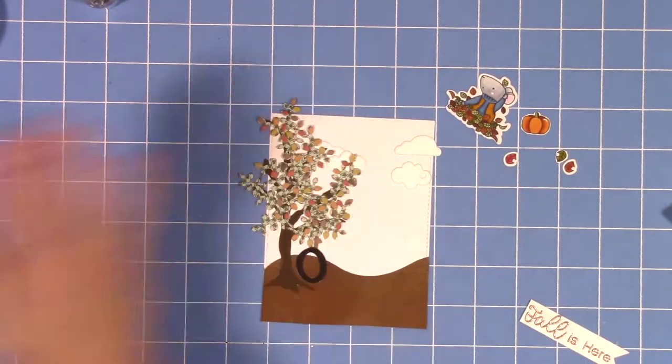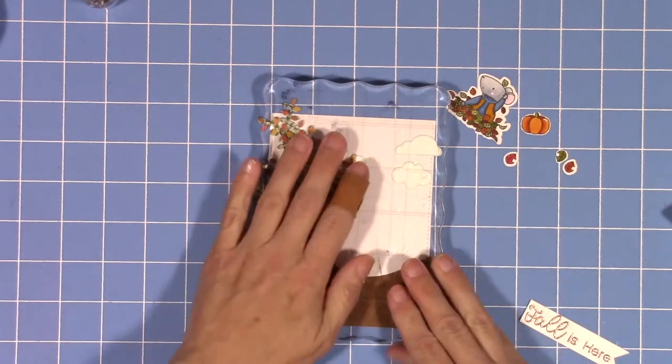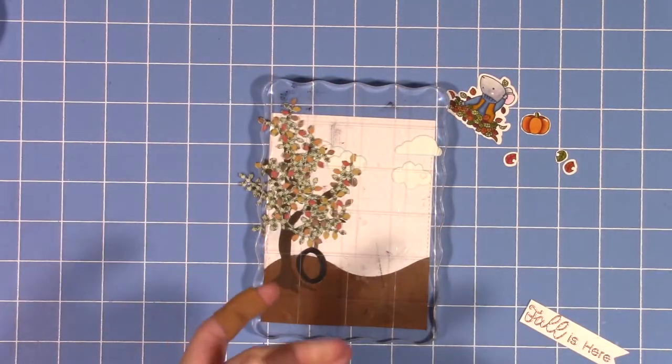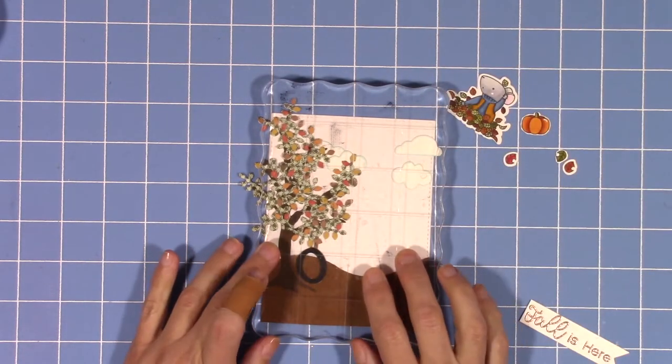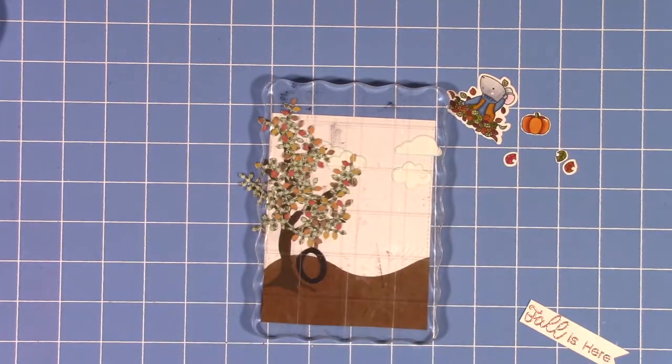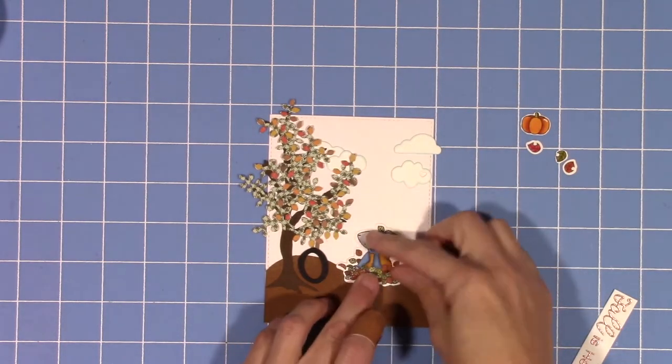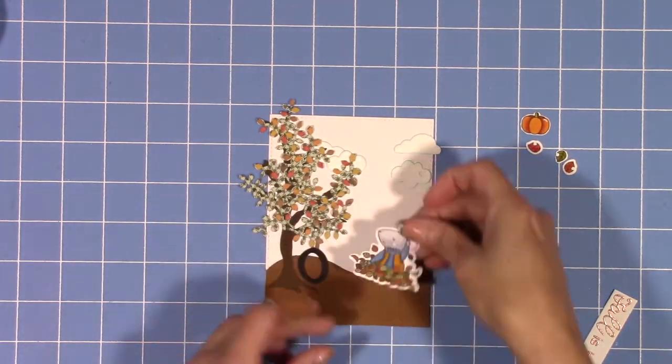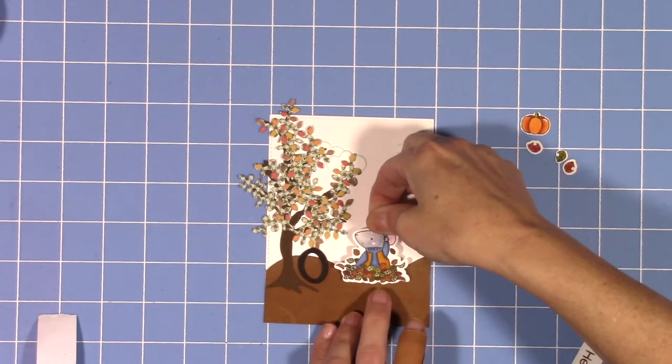The card stock I'm using for the yellow frame and for all of my card bases is Basil brand. I got them at Joann's when they were on sale, like ten for a dollar. I got a whole bunch and it's pretty thick, so it makes good card bases and really good frames.